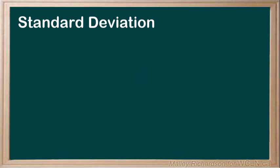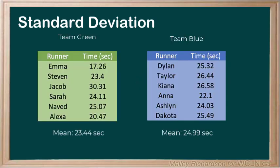Let's go back to our track example. We found the mean of the green team to be 23.44 seconds, and the mean of the blue team to be 24.99 seconds. Now we want to look at the standard deviation of each team. For now I will give you these values, but in the next lesson we will learn how to actually calculate them. For the green team, the standard deviation is 4.03 seconds, and for the blue team it is 1.54 seconds.